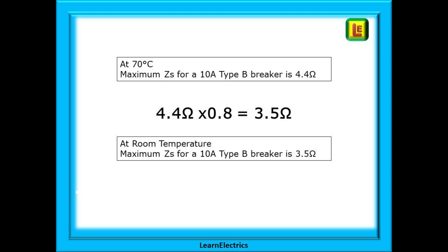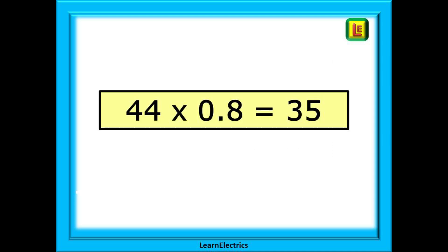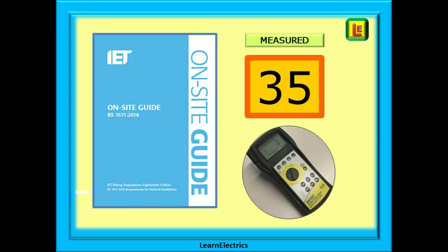Applying the same rules to a 10 amp type B breaker: 4.4 ohms times 0.8 is 3.5 ohms. If we measure less than 3.5 ohms at room temperature, then even at 70 degrees the resistance will not exceed 4.4 ohms. Now here is the trick: 44 multiplied by 0.8 is 35. The magic number 35 allows us to quickly calculate the maximum measured ZS — the number that we should be using when measuring with our test meter.